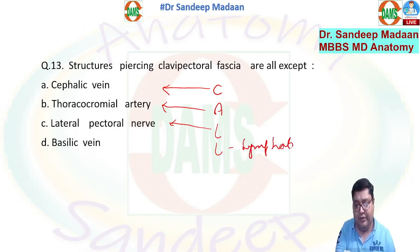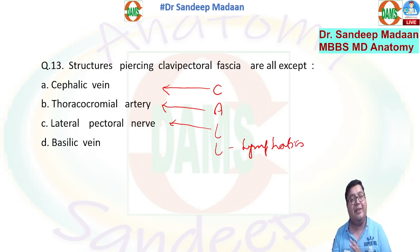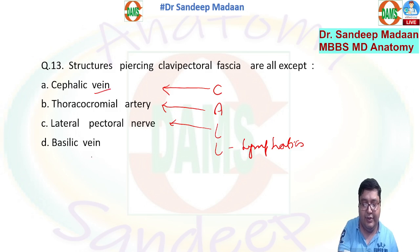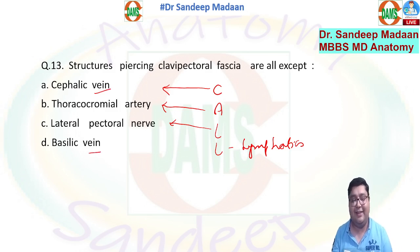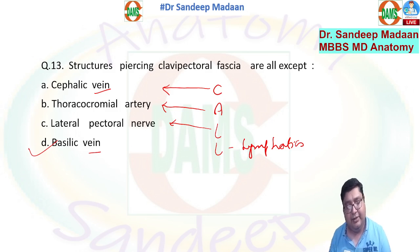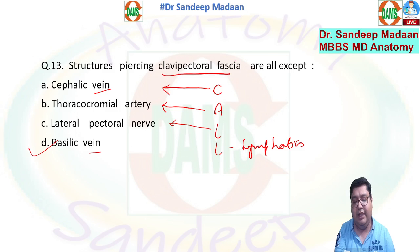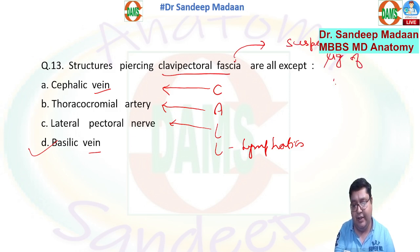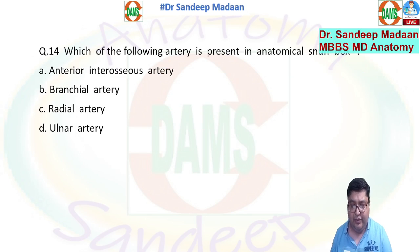Among the CALL structures — one vein, one artery, one nerve, one lymphatic — no structure is repeated. If the question lists two veins, one must be the answer. So the answer is D, the basilic vein, which does not pass through the clavipectoral fascia. Below the subclavius and pectoralis minor, the clavipectoral fascia continues as the suspensory ligament of the axilla.